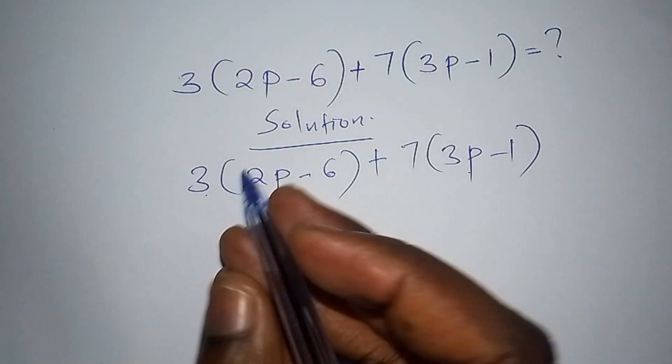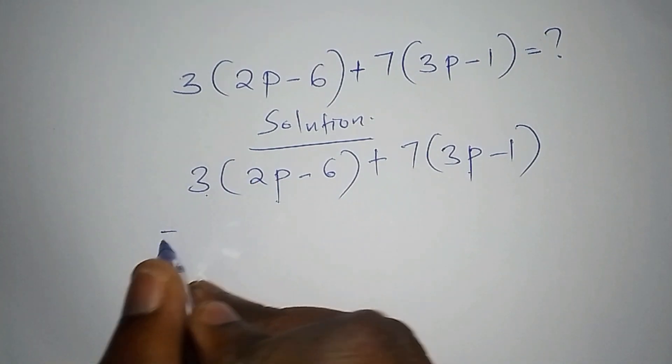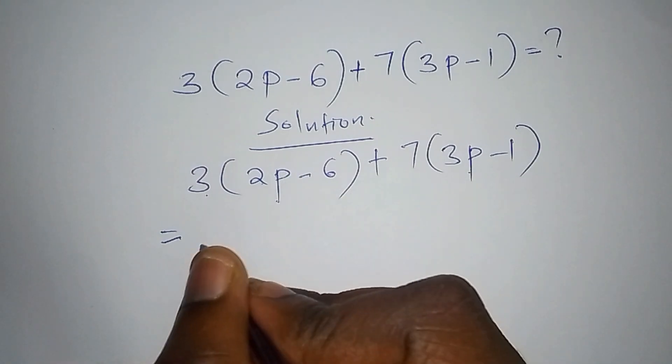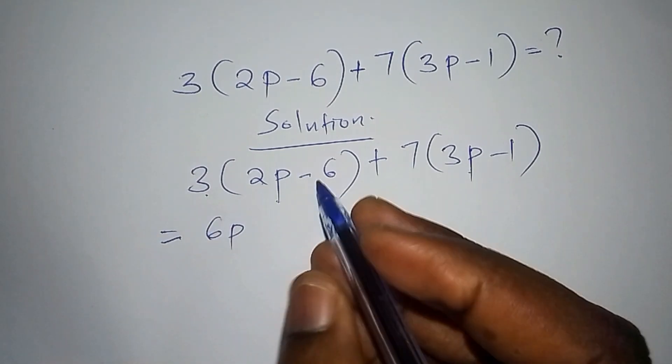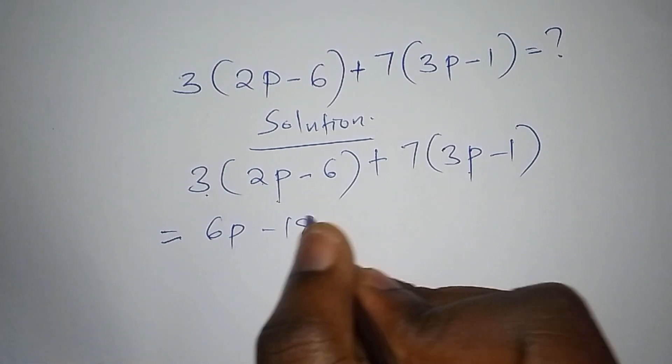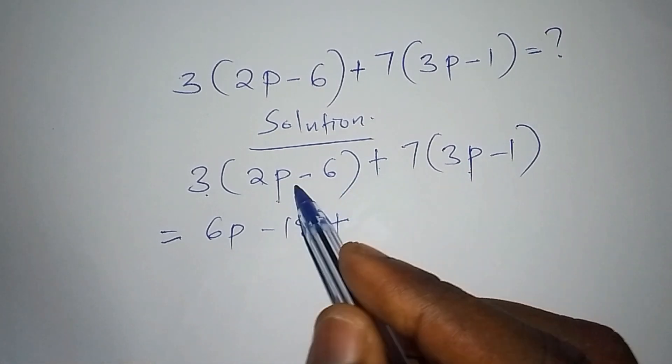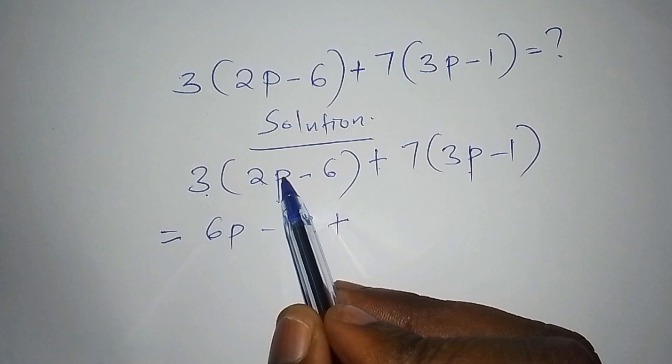We shall say that this one shall now be equals to 3 multiplied by 2 is 6, that is 6p, then 3 multiplied by minus 6, we shall have minus 18, then we shall add to. So meaning that this bracket has now been done.